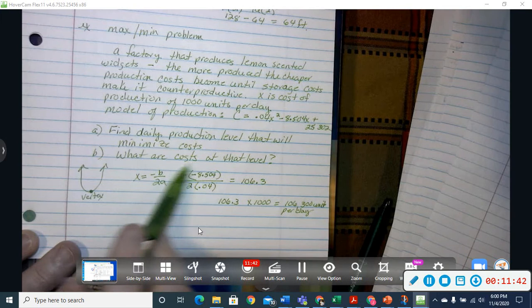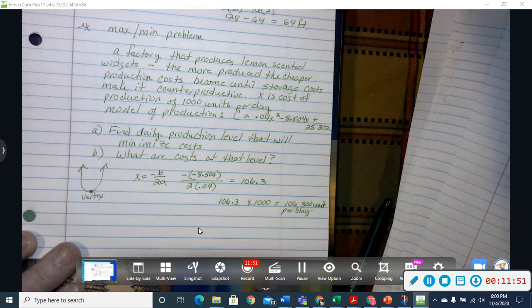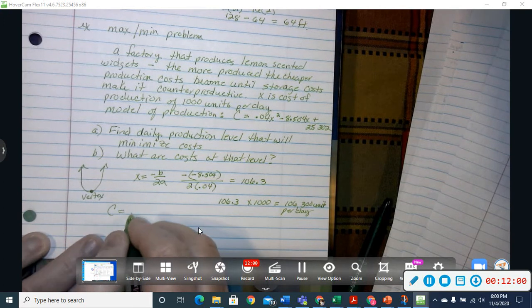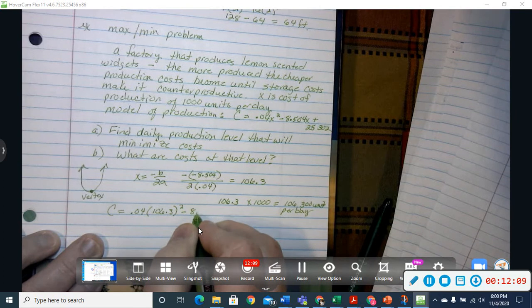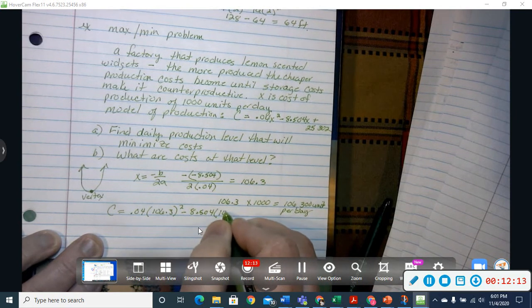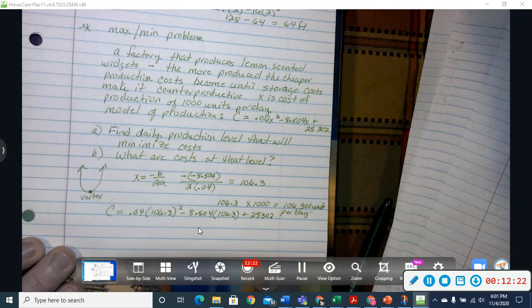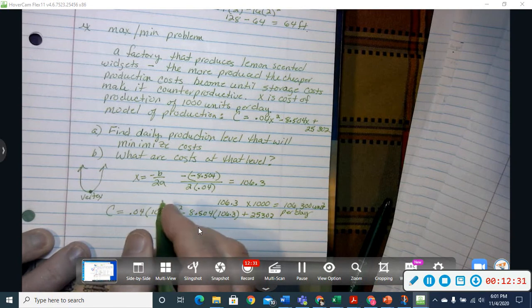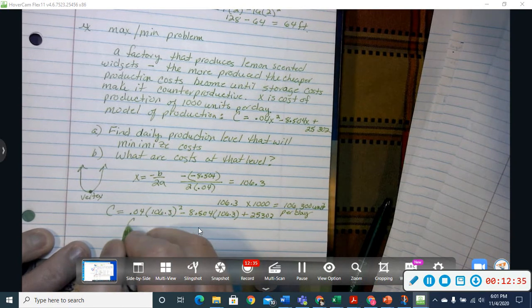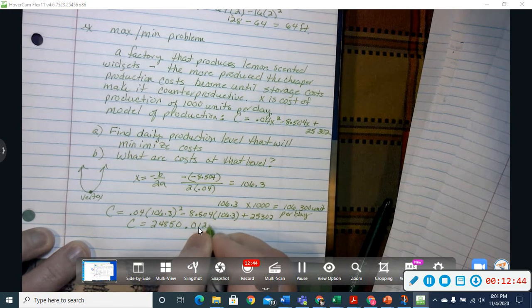The second part of our problem is, what are the cost at that level? We still are going to use this number, the 106.3, not the one where we multiplied by 1,000. So, we're going to take that number and plug into our model equation to find C, the cost. .04 times 106.3 squared, minus 8.504 times 106.3, plus 25302. And when we work all of that out, we should get the amount of 24850.0124.